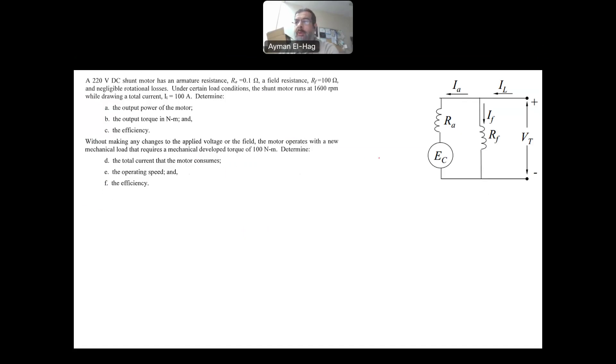Okay, so in this question, it's a shunt motor. The previous question was shunt, and this is also a shunt motor, has an armature resistance RA equal to 0.1 ohm, and the field is 100 ohms, and it has negligible rotational losses. It's also 220, so this is your terminal voltage. Your total current is 100 amps.